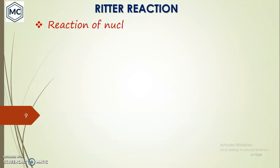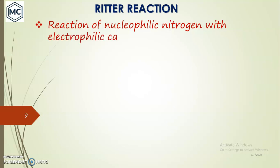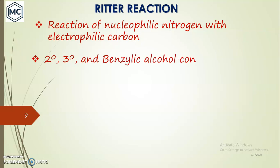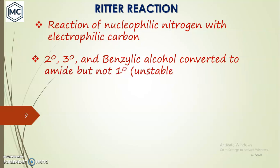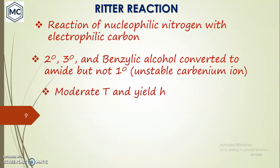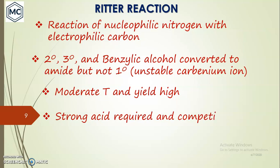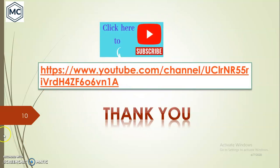In summary, the Ritter reaction is a reaction of nucleophilic nitrogen with electrophilic carbon. Secondary, tertiary, and benzylic alcohols are converted to amides, but never primary alcohols, because primary carbocations are unstable. The Ritter reaction occurs at moderate temperature and gives very high yield, but one limitation is that you need a strong acid and there is a possibility of competing side reactions. Thank you for watching.